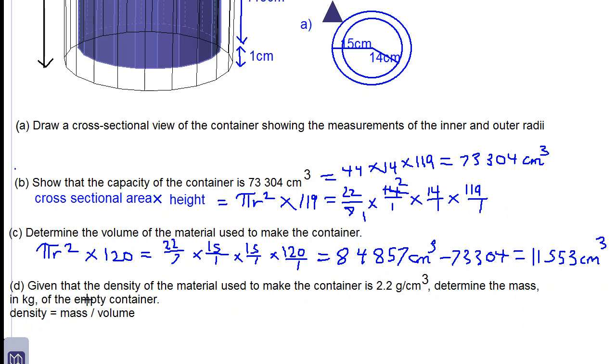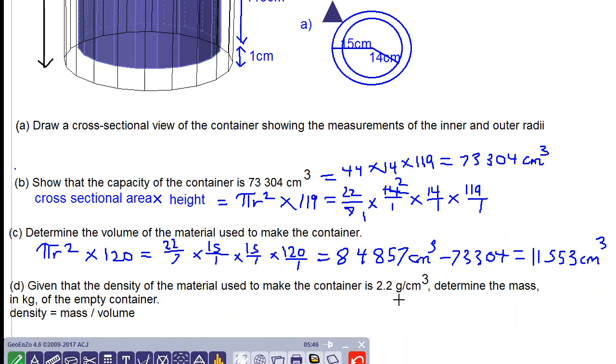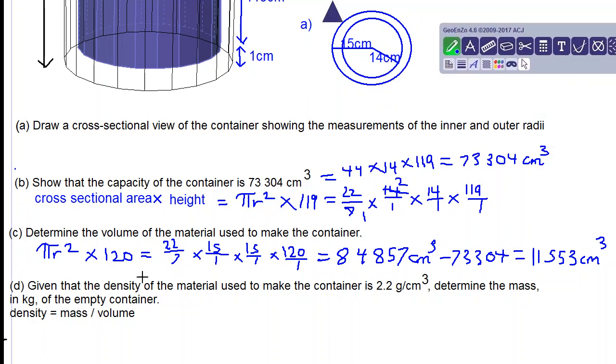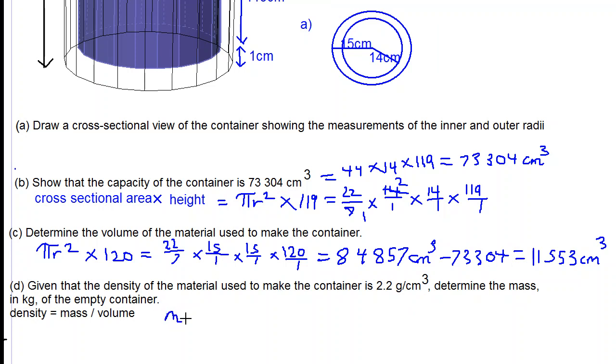Let's move on to part D. Given the density of the material used to make the container is 2.2 grams per cm cubed, determine the mass in kilograms of the empty container. Density equals mass divided by volume. We have the volume of the container, we have the density of the material. If we make mass the subject of the formula, mass equals density times volume.